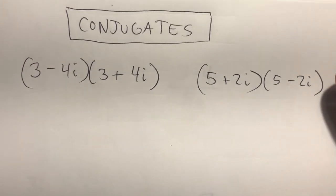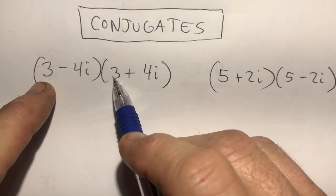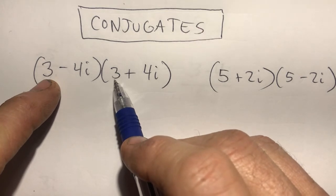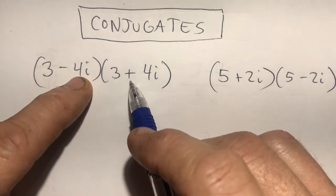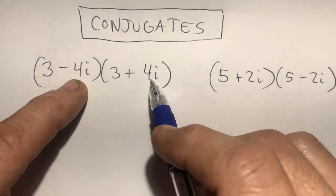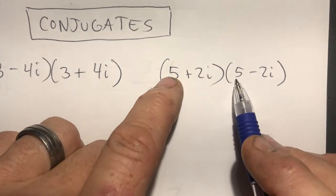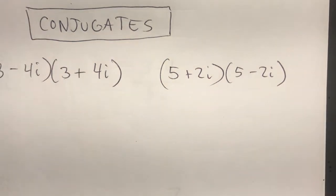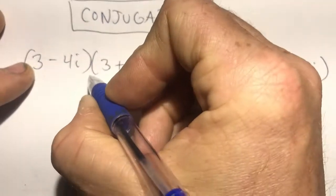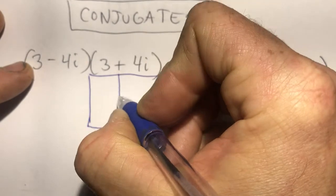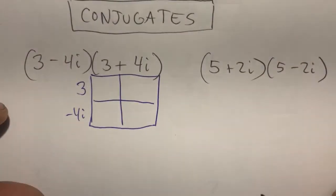Now these are conjugates. Conjugates are when the real parts are the same but the imaginary parts are opposites. So three minus 4i and three plus 4i are conjugates. Here's another one: both have five as the real part but opposite imaginary parts. When I multiply conjugates, I'll build a box.